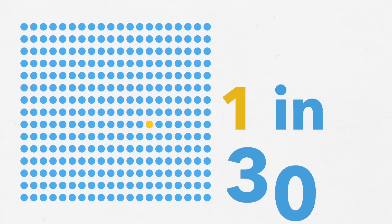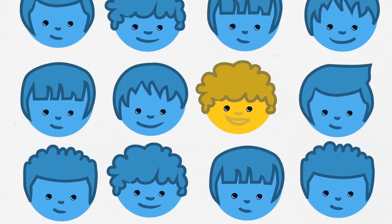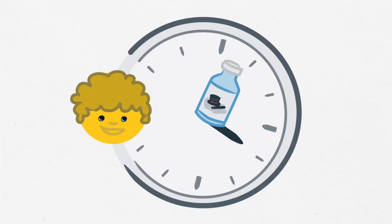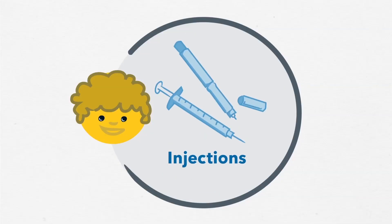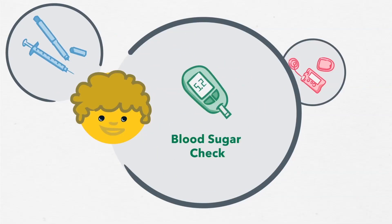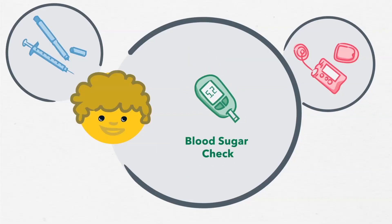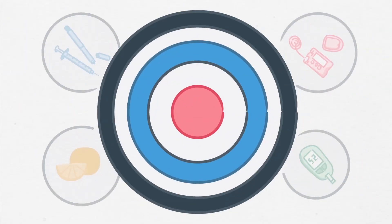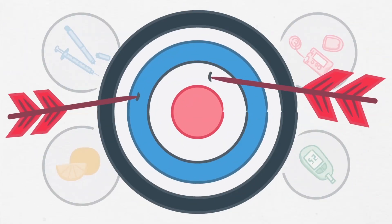About 1 in 300 children has type 1 diabetes. Kids with diabetes take insulin several times a day, either by injections or through an insulin pump. They have to check their blood sugar often and closely monitor what they eat. The goal is to try and keep blood sugars within a target range, but that doesn't always work.